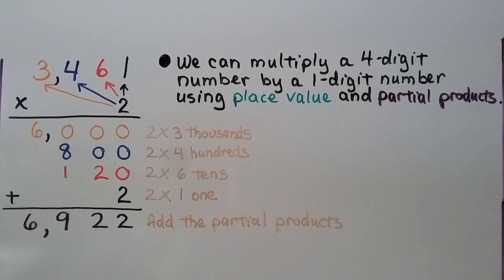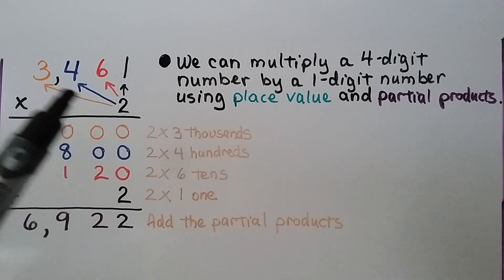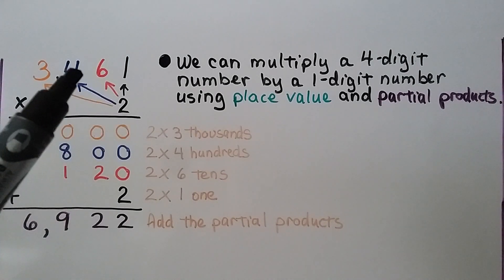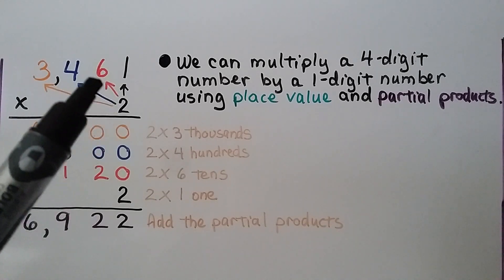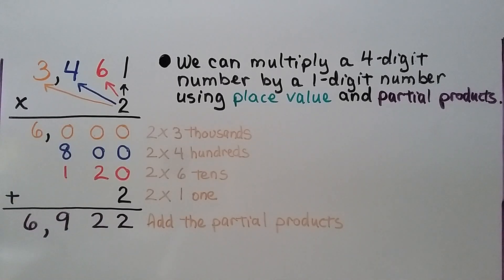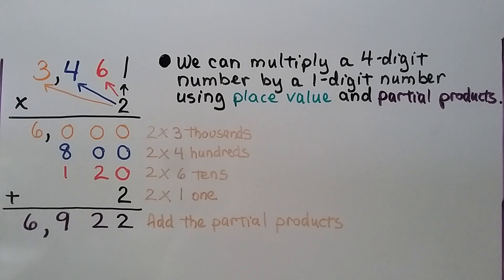We can multiply a 4-digit number by a 1-digit number using place value and partial products. We have 3,461 times 2. We start with 2 times the greatest place value, the thousands: 2 times 3,000 is 6,000. We have 2 times 400, which is 800. 2 times 60 is 120. Then 2 times 1 is 2. We total up all our partial products and get 6,922.